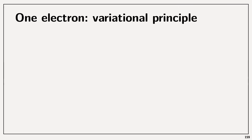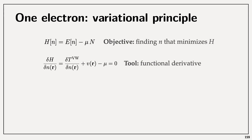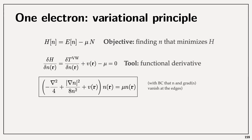We can now cast the one-electron problem as a variational problem. This is the functional we want to minimize — the energy with the constraint on the number of electrons using a Lagrange multiplier. We calculate the functional derivative of this, which includes the trivial functional derivative of the external potential energy (a local functional), and then we keep working our way through until we obtain a differential equation for the density.